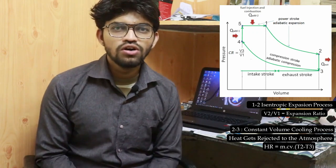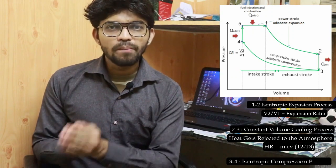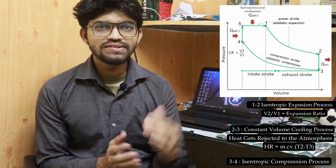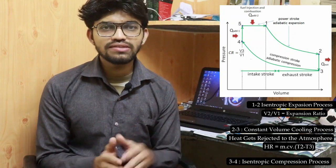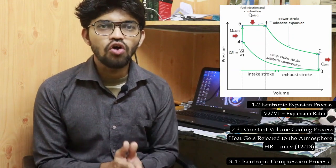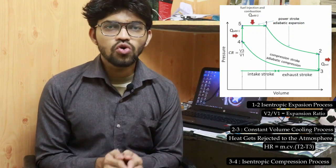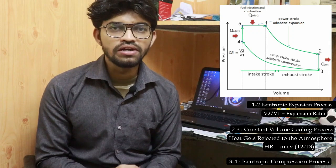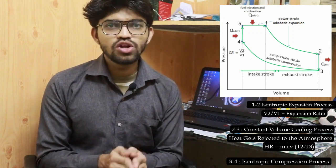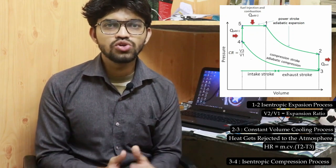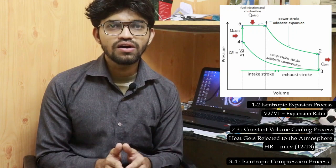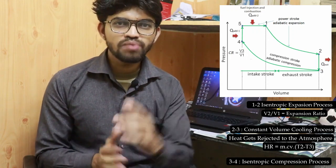After heat rejection, process 3 to 4 is the isentropic compression — a reversible adiabatic compression process. The piston moves from bottom dead center towards top dead center, compressing the air inside the engine cylinder. Work is done by the piston on the gas, increasing the internal energy of the air, so volume reduces and pressure builds up. The ratio v3/v4 is the compression ratio. No heat transfer takes place during this process.